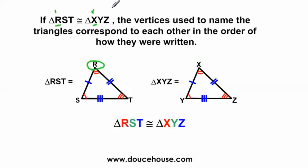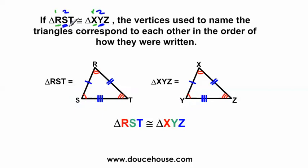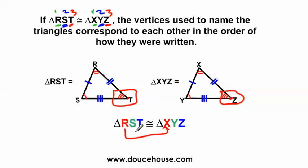Moving on — the next letter: S comes second here and Y comes second here, so this vertex S matches up with vertex Y. And then finally, T comes third here and Z comes third here, so vertex T and vertex Z — these two corners — match up. These vertices always match up in the order in which they're written, and that's something we're going to use on the next slide.